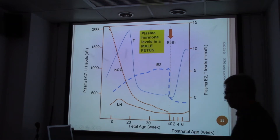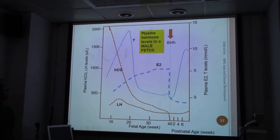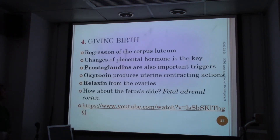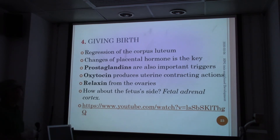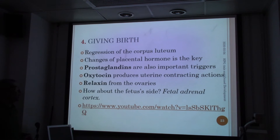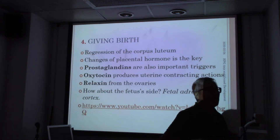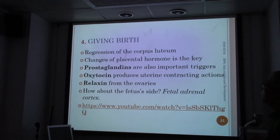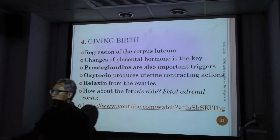After birth, we need to prepare the baby with milk. Giving birth involves regression of the corpus luteum, and progesterone goes down. The central hormones are key. We also have other key players including prostaglandins and oxytocin — we talked about oxytocin previously — and also relaxin from the ovary. From the fetus, hormones from the fetal adrenal cortex also signal that the baby is ready to be born. For details of this sequential event, please refer to the linked resource on Blackboard.